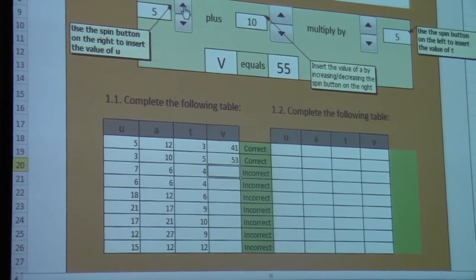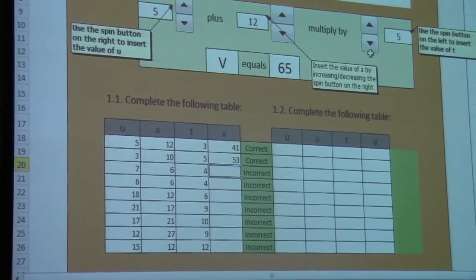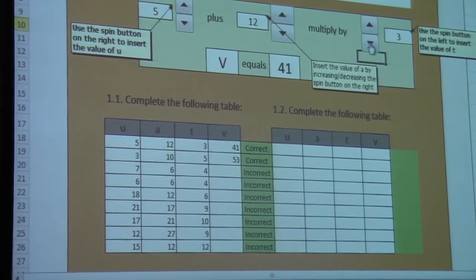And then the answer will check in the 5, and then we've got 12 there, and then here you get 3, sorry 3 there, and then the answer is 41, and then it becomes correct.